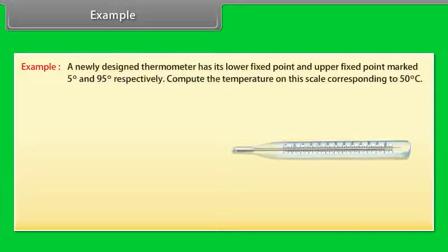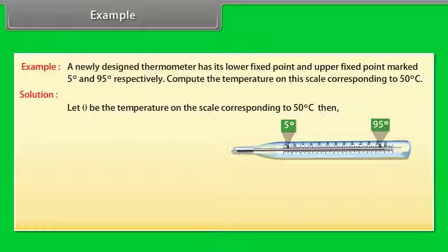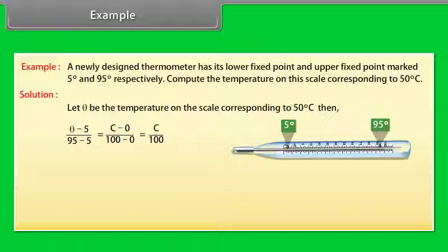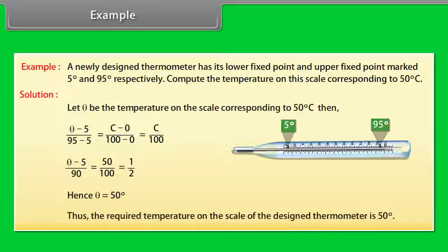Example: A newly designed thermometer has its lower fixed point and upper fixed point marked as 5° and 95° respectively. Compute the temperature on this scale corresponding to 50°C. Let θ be the temperature on the scale. Then (θ − 5)/(95 − 5) = C/100, which gives (θ − 5)/90 = 50/100. Hence θ = 50°. The required temperature on the designed thermometer scale is 50°.